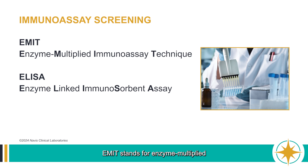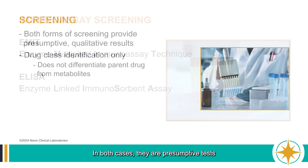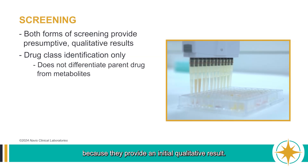EMIT stands for Enzyme Multiplied Immunoassay Technique. ELISA stands for Enzyme Linked Immunoassay. In both cases, they are presumptive tests because they provide an initial qualitative result.